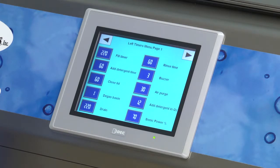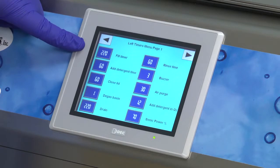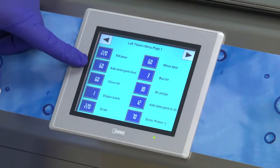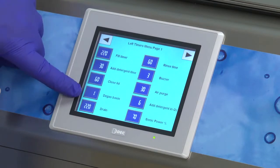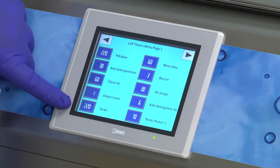In page one of the timers menu, the first option is the fill timer, which sets the duration for filling the machine with water at the beginning of a cycle. Add detergent time is preset and should not be changed. The closed lid setting determines the amount of time you have to close the lid before an alarm sounds. Degas basin is for facilities that have extremely hard water or high amounts of gas. The default is set at only one second. The drain is set at 220 seconds and should not be changed.